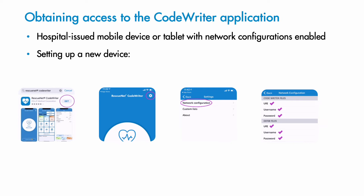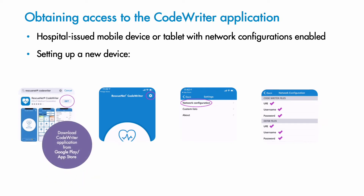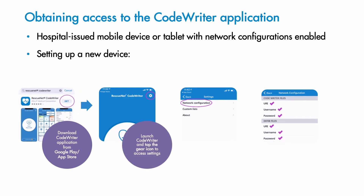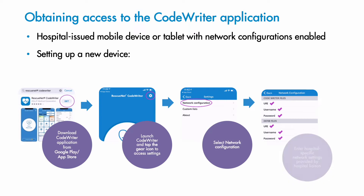To set up a new device, download RescuNet CodeWriter from the Google Play Store or the Apple App Store. Launch the app and tap the gear icon to access settings. Select Network Configuration and enter your hospital-specific network settings provided by your hospital's liaison.